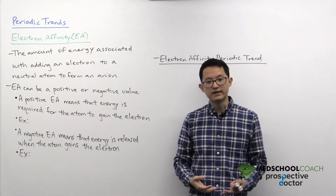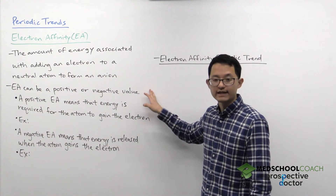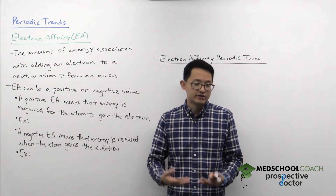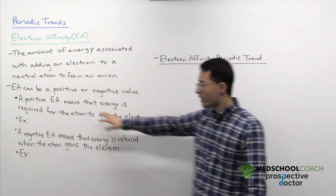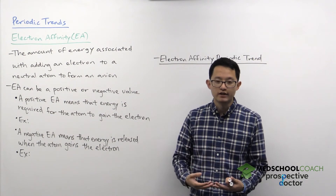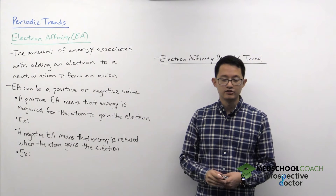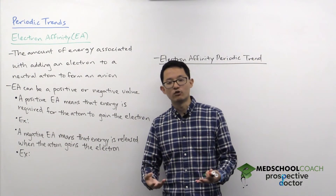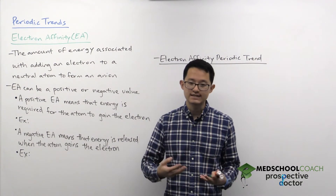The interesting thing about electron affinity is that it can have both a positive or negative value. If you have a positive electron affinity, that means that energy is required in order for that atom to gain that electron. If energy is required in the process, that means the product you form is going to be higher in energy, which means it's going to be less stable.